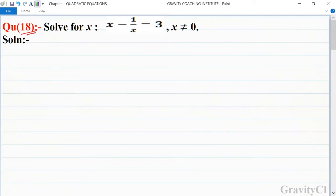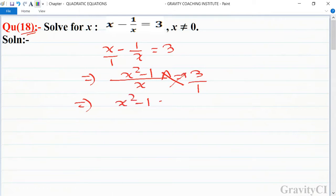Quadratic equations, question number 18: Solve for x, x minus 1 upon x is equal to 3. First we take the LCM, so x squared minus 1 is equal to 3. After cross multiplication we get x squared minus 1 is equal to 3x.